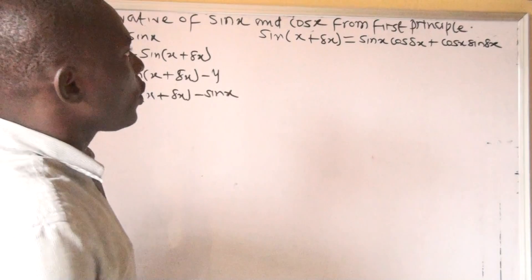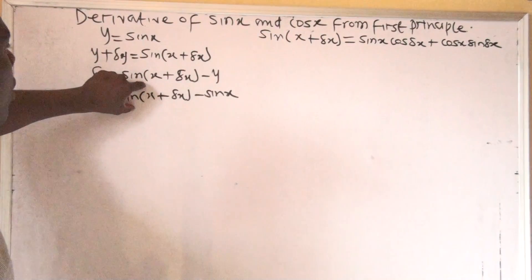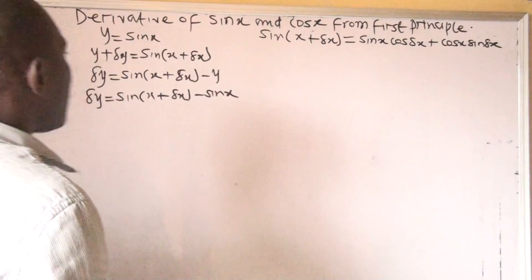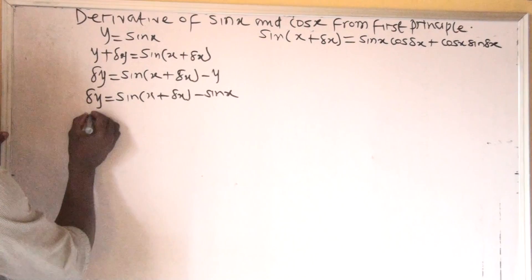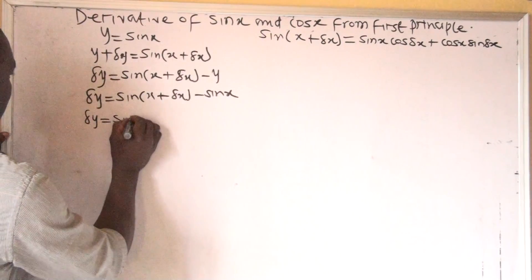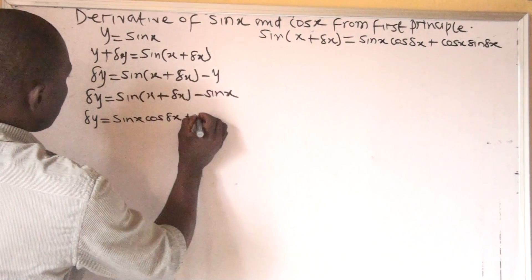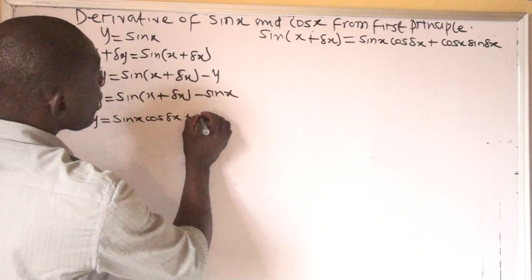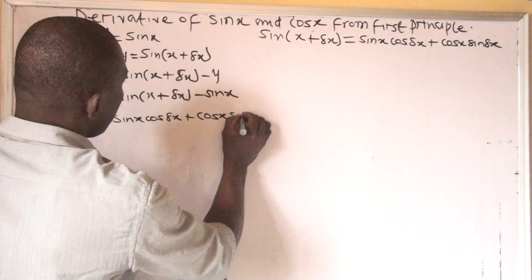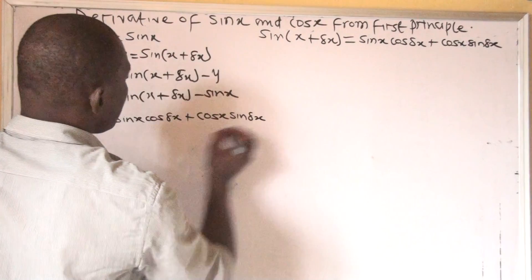We replace sin(x plus delta x) with that expression. So delta y becomes sin x cos(delta x) plus cos x sin(delta x).